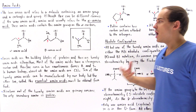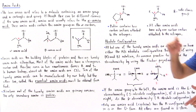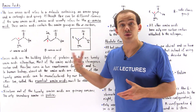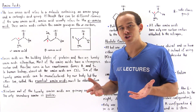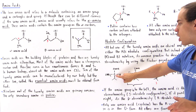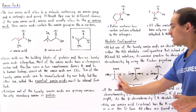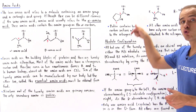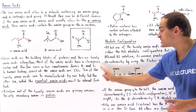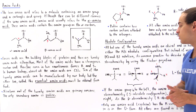Now let's move on to the stereochemistry of amino acids. All but one of the 20 amino acids are chiral, so they have either the R or S absolute configuration. However, instead of using R/S notation, it's common practice to describe the stereochemistry of amino acids the same way we did for carbohydrates — using the Fischer projection. To use the Fischer projection, we draw the central chiral carbon with the carboxylic acid group pointing up and the side chain pointing down.